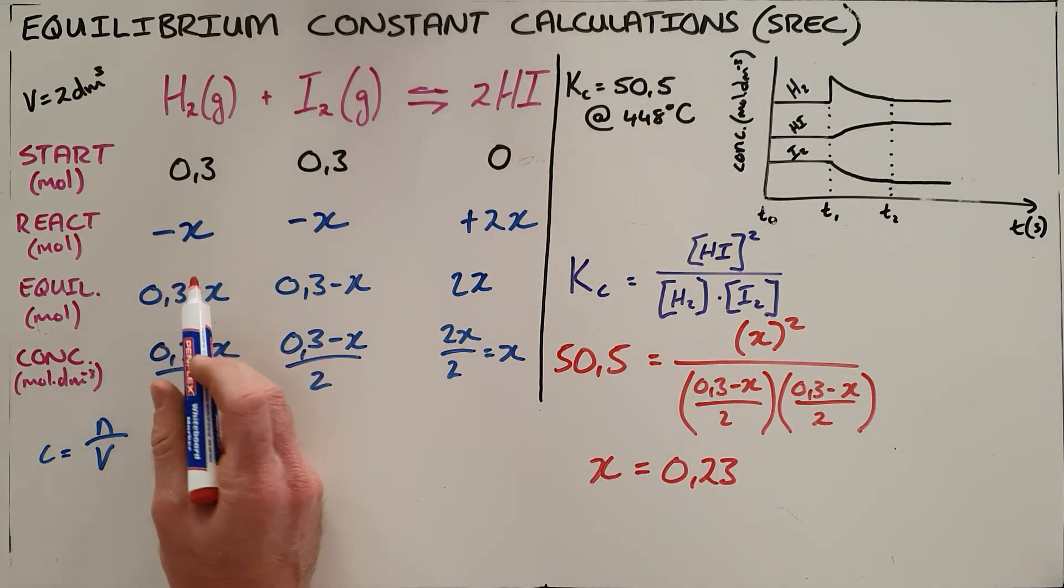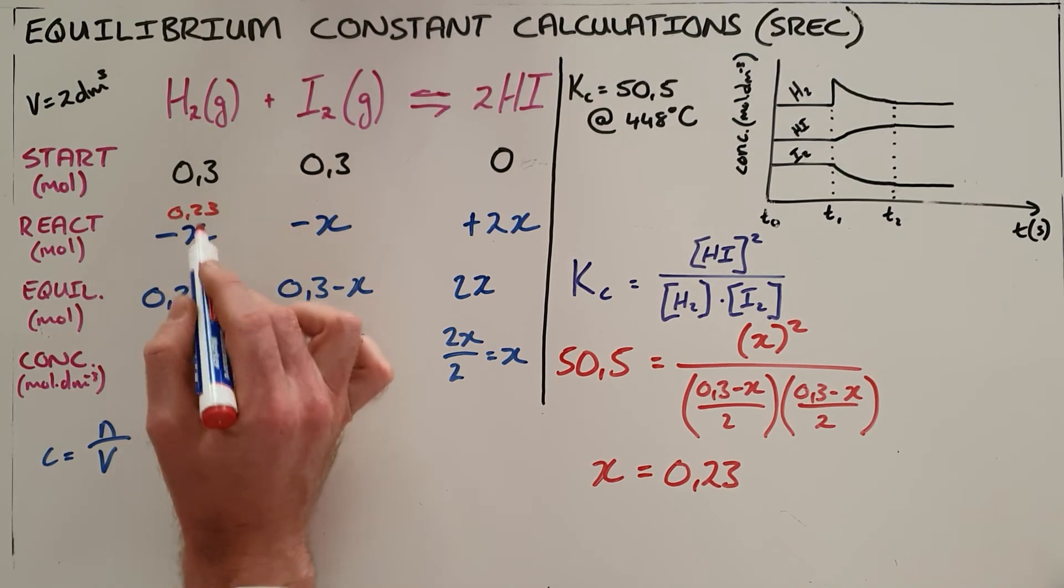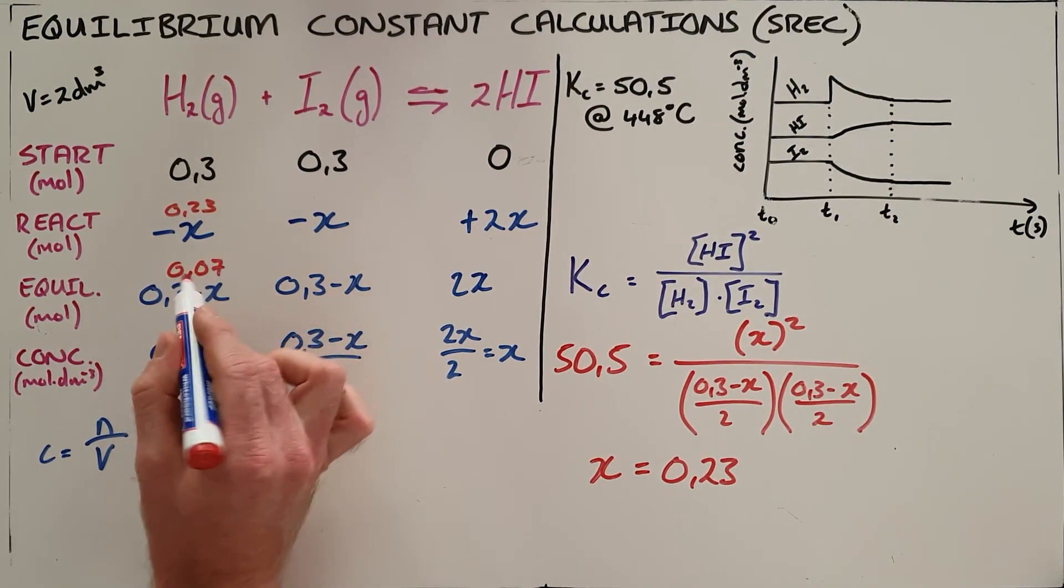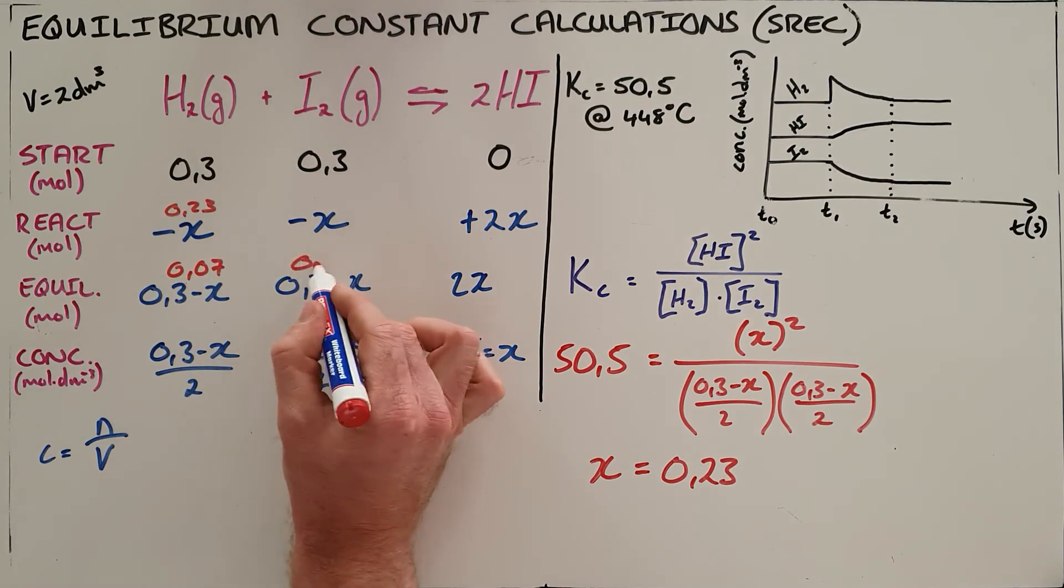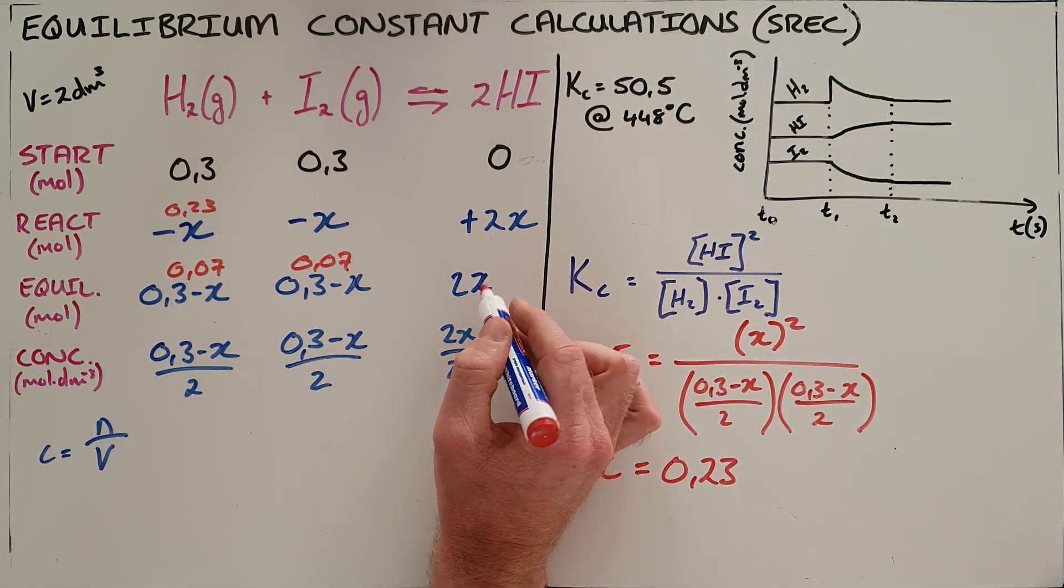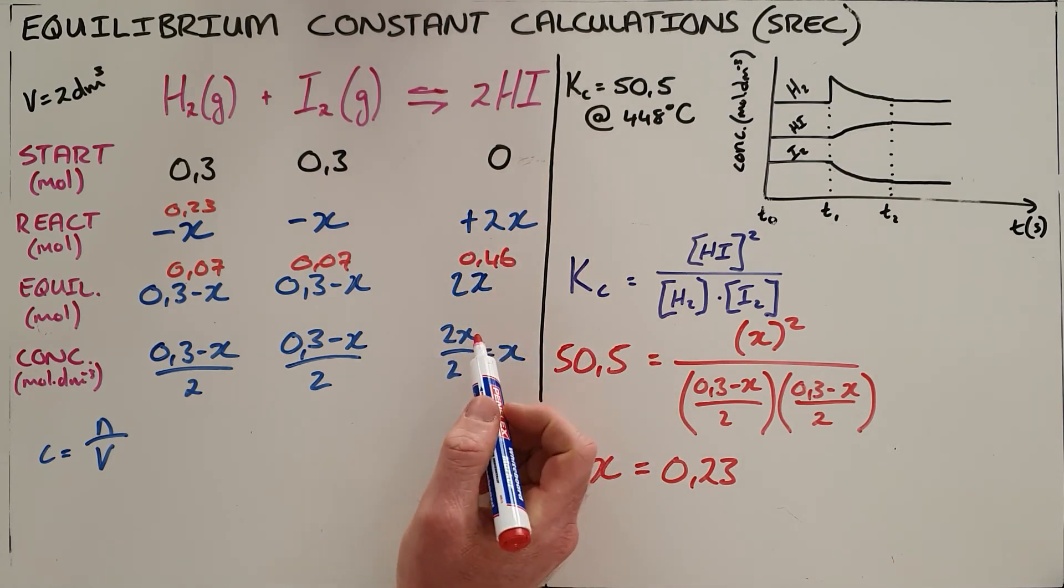Since 0.23 moles of hydrogen reacted, at equilibrium we have 0.07 moles of hydrogen remaining, the same for iodine, and 0.46 moles of hydrogen iodide—twice the value of X.